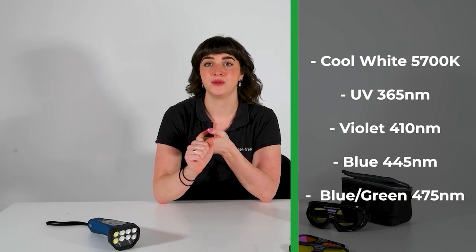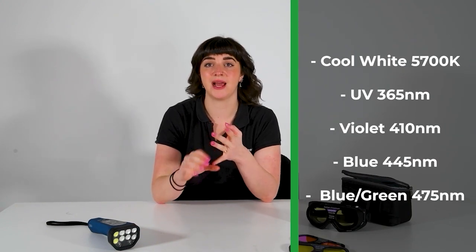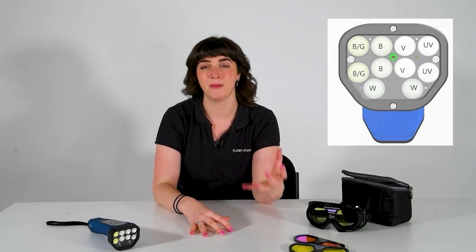The wavelengths included within the Crimelight X5 are a cool white light, UV light, violet light, blue light and blue green light. So that's five wavelengths and we have two LEDs per wavelength.